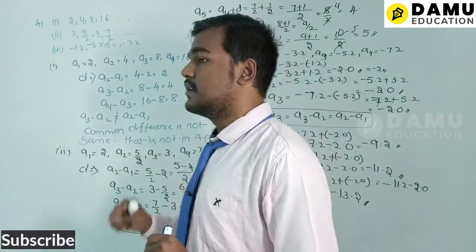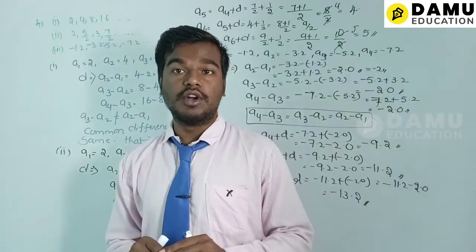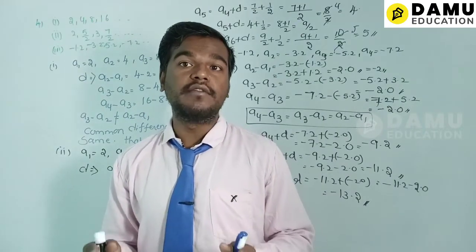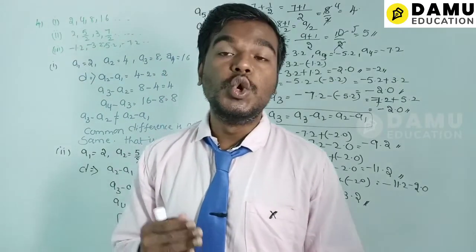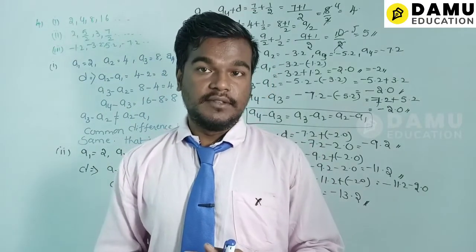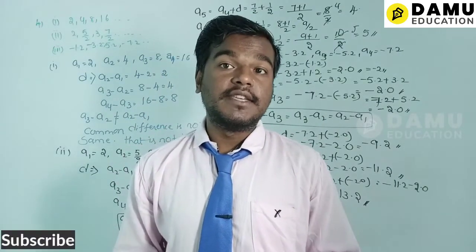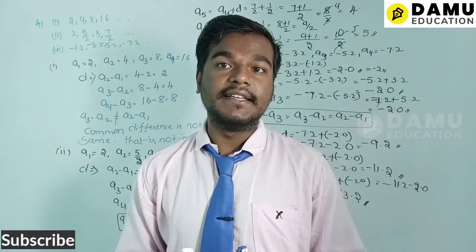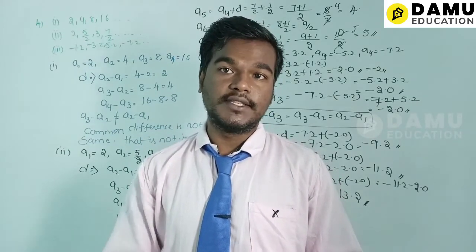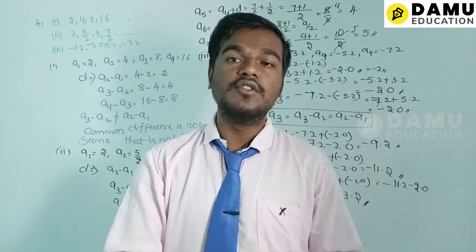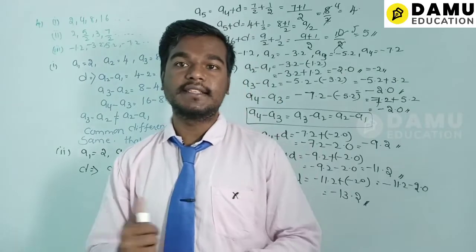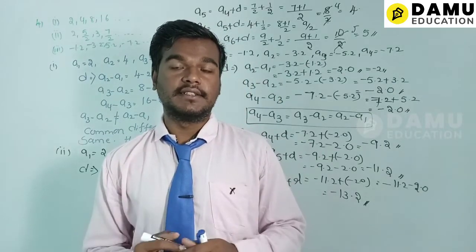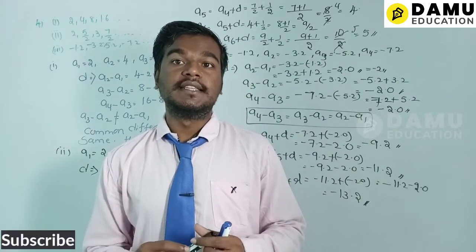We find each next term by adding the common difference to the preceding value — a3 = a2 + d, a4 = a3 + d, a5 = a4 + d. This is the method to find the solutions.